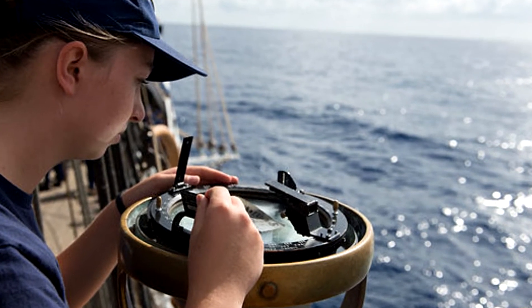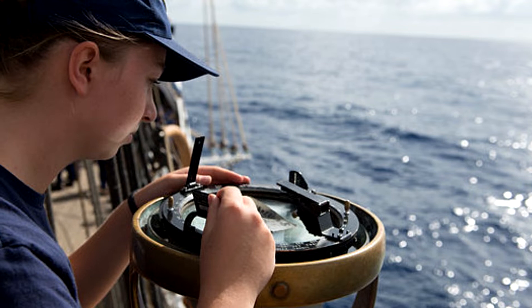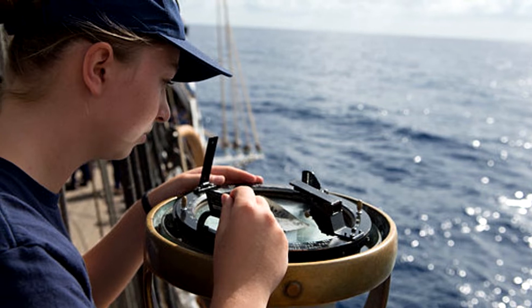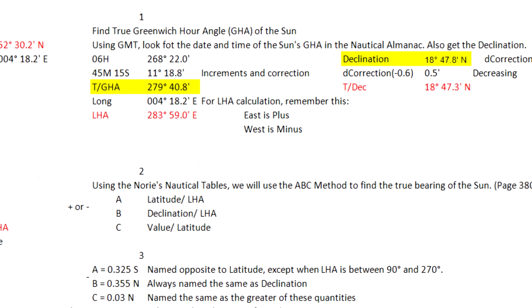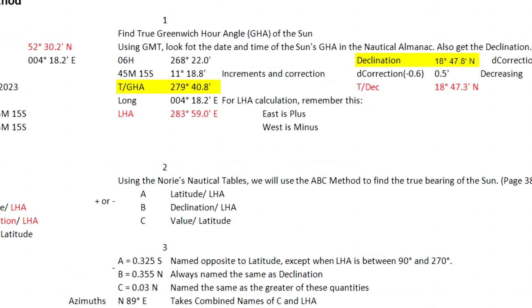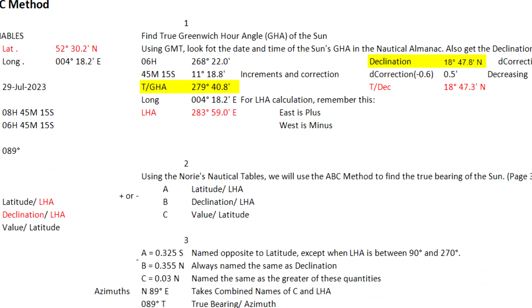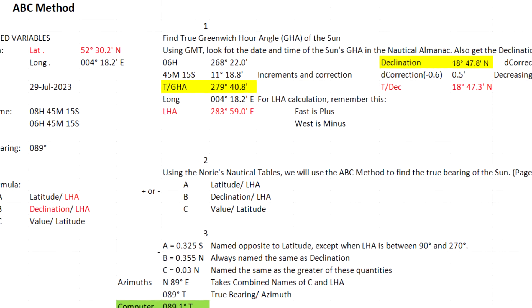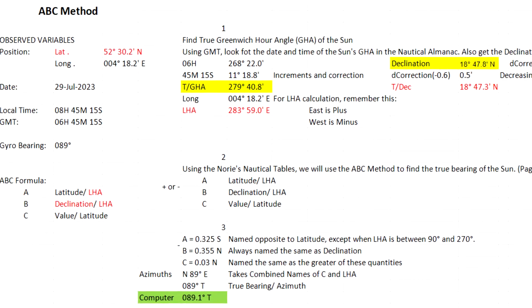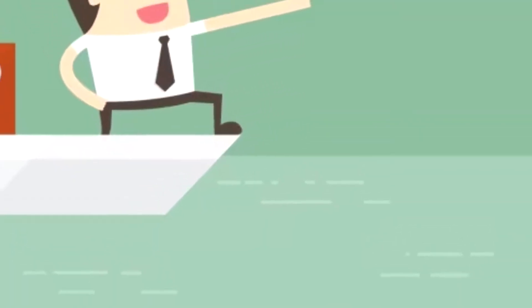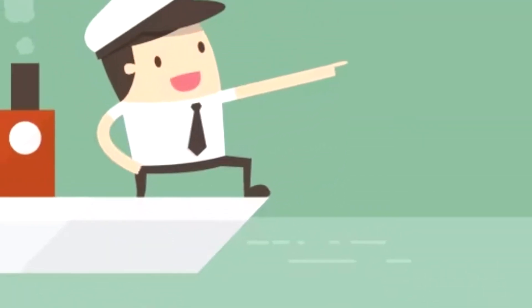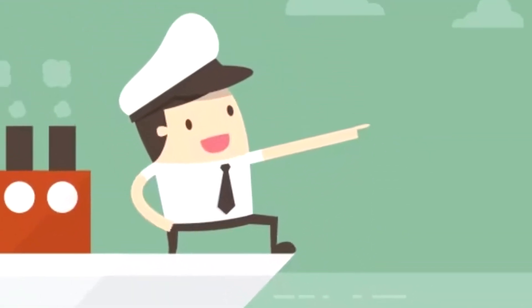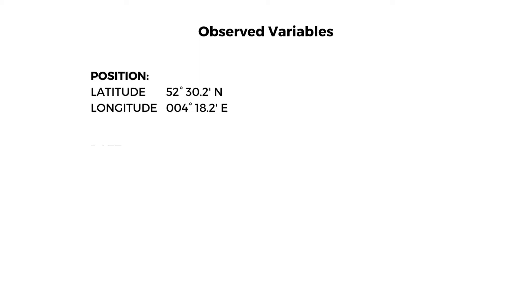...using the renowned ABC method. This method stands as one of the most widely recognized ways to find the gyro error of your compass. Let's begin. Suppose we're at position 52° 30.2' north latitude and 004° 18.2' east longitude...